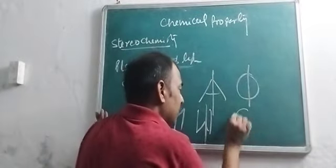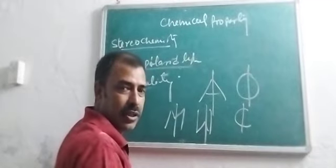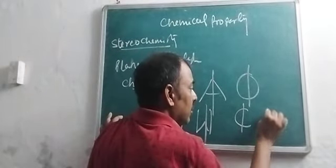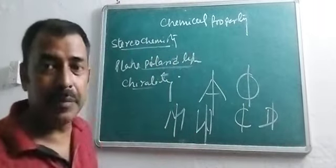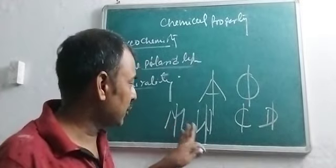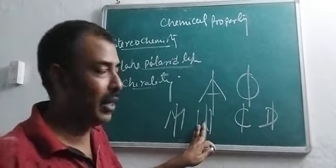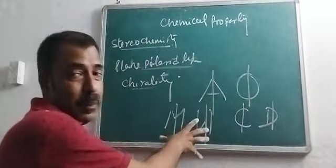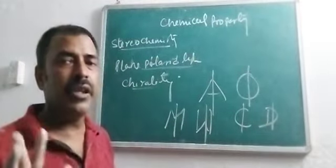For letters: C, D are examples where the mirror image is NOT the same — these are chiral. But A, O, M, W are bilaterally symmetrical — their mirror image is the same, so they are achiral.